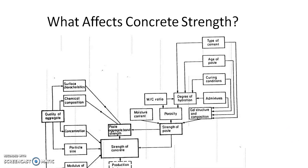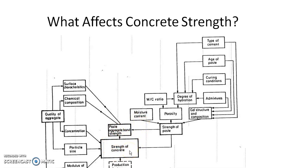What affects the concrete strength? The aggregate qualities — surface characteristics of the aggregate, its chemical composition, its concentration, its particle size, and its modulus of elasticity — all contribute to the strength of concrete. On the right-hand side, cement types, type of cement, age of the paste, curing condition, the admixture used, the gel structure, and the degree of hydration are listed. Then comes the water-cement ratio, moisture content and porosity. All these factors point towards the strength of concrete, which mainly depends upon the water-cement ratio and the degree of compaction.